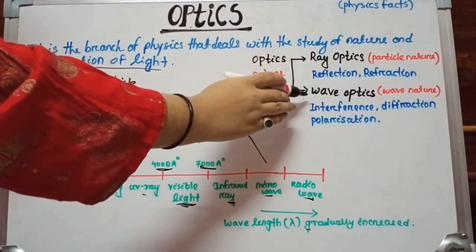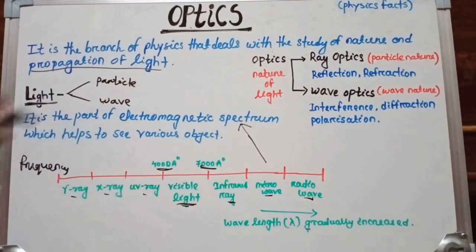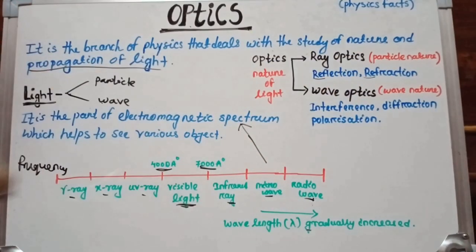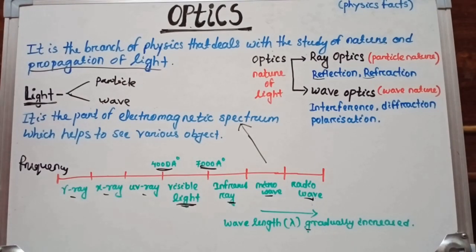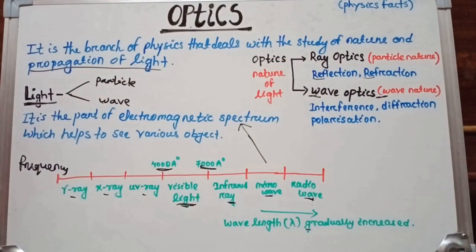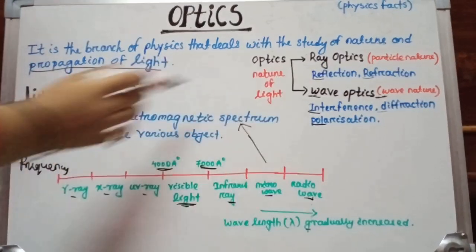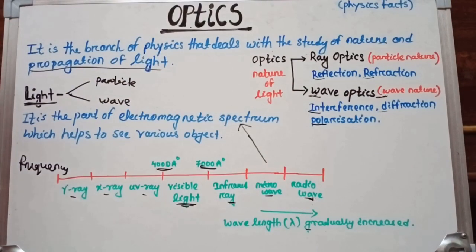Depending upon the nature of light, optics is divided into two main categories. One is ray optics and another one is wave optics. In ray optics, we deal with particle nature and discuss propagation of light and laws of reflection and refraction. In wave optics, we concern ourselves with the wave nature of light, discussing interference, diffraction, and polarization. We will study wave optics later; now we go to ray optics.